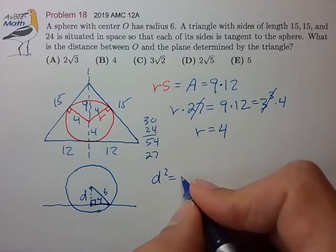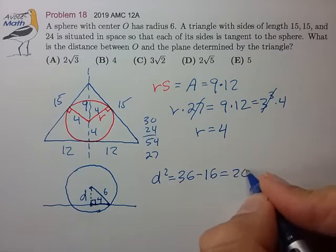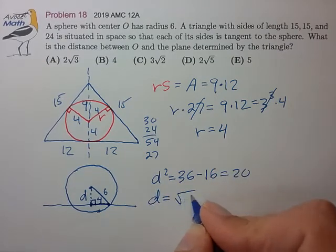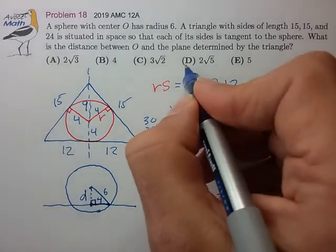D squared is equal to 6 squared minus 4 squared, which is 20. D is equal to root 20, or 2 root 5, for choice D.